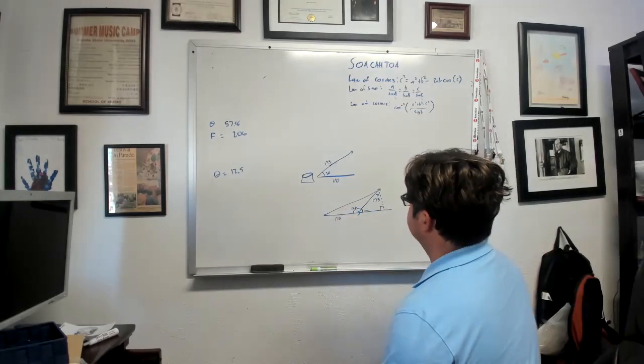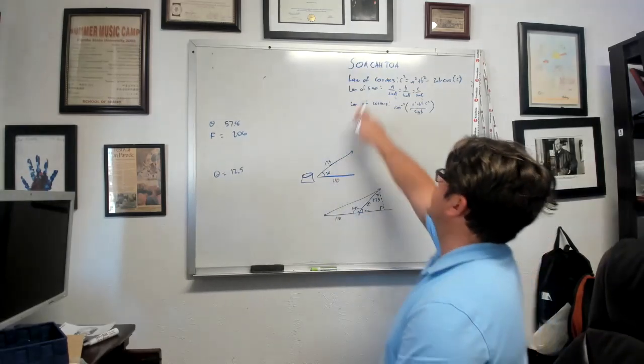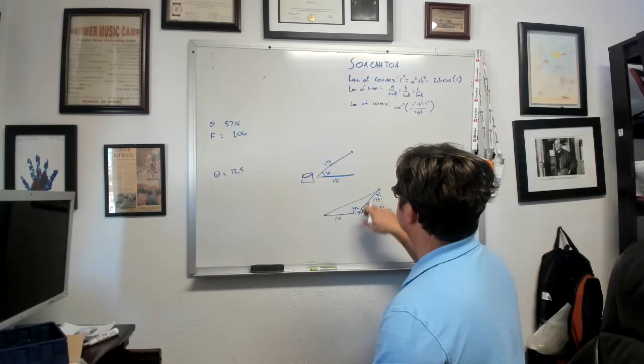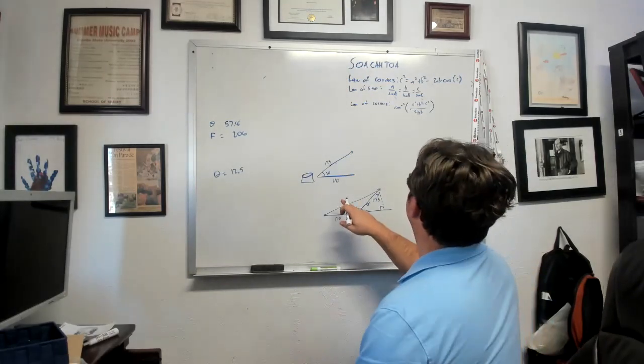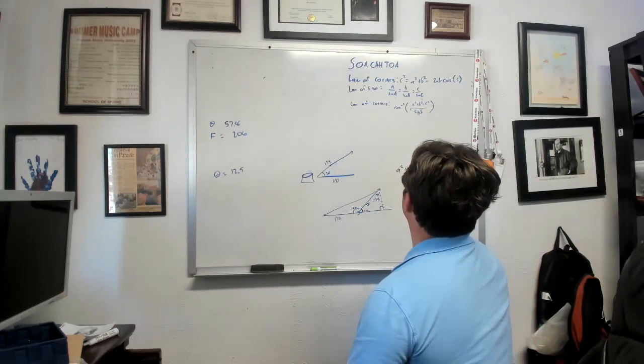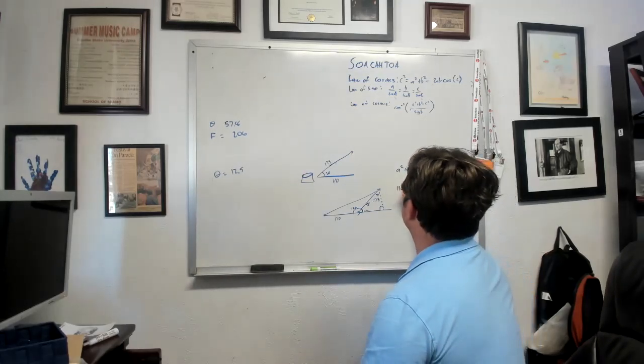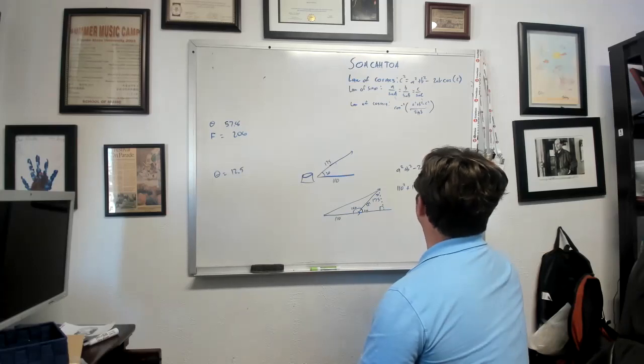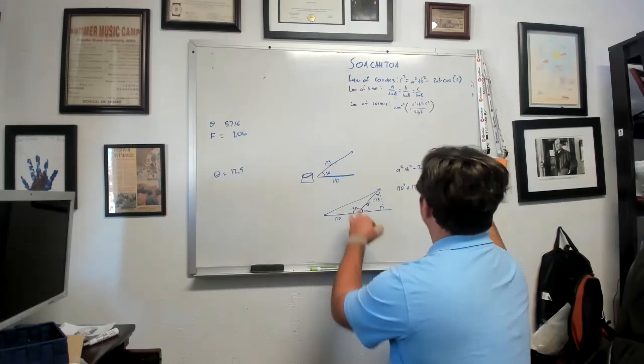So we can calculate out this triangle. We know that this is 175. And we know based on SOHCAHTOA that we can calculate our angles here. Actually, we're going to end up using the law of cosines. So we're going to say a squared plus b squared minus 2ab times the cosine of c. So a squared is 110 plus 175 squared minus 2 times 110 times 175 times the cosine of 160.